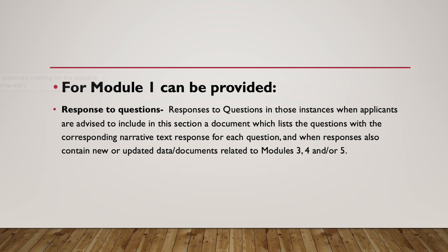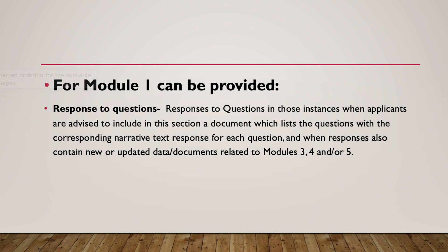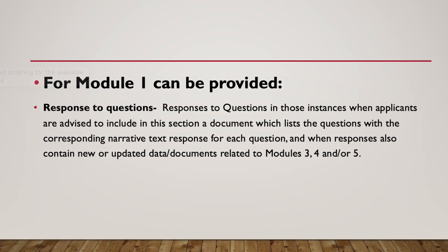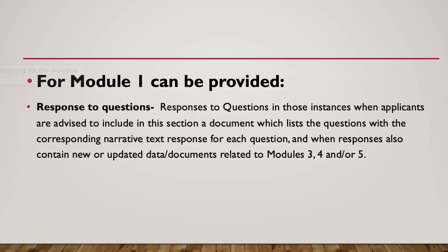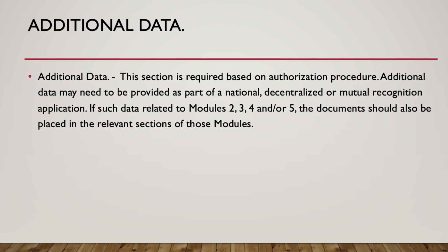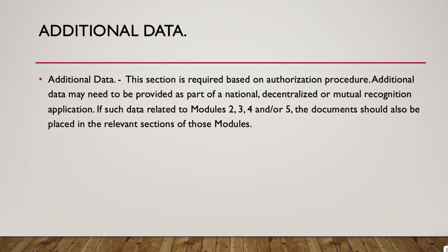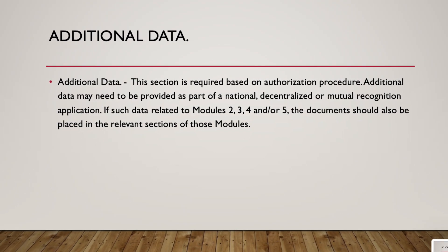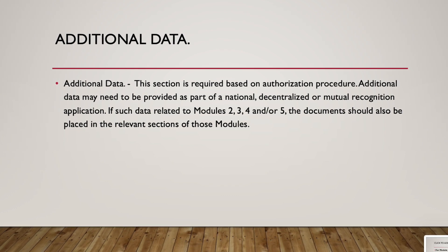For Module 1, responses to questions should be provided in those instances when applicants are advised to include a document listing the questions with corresponding narrative text responses for each question, and when responses also contain new or updated data documents related to Modules 3, 4, and/or 5. Additional data may need to be provided as part of a national, decentralized, or mutual recognition application. If such data relates to Modules 2, 3, 4, and/or 5, the documents should also be placed in the relevant sections of those modules.